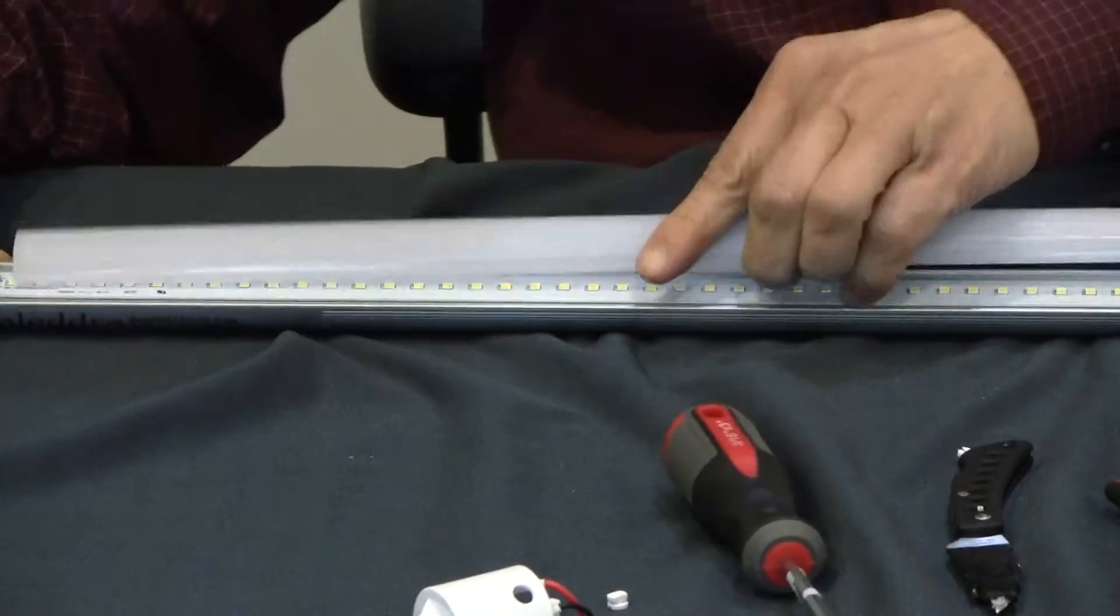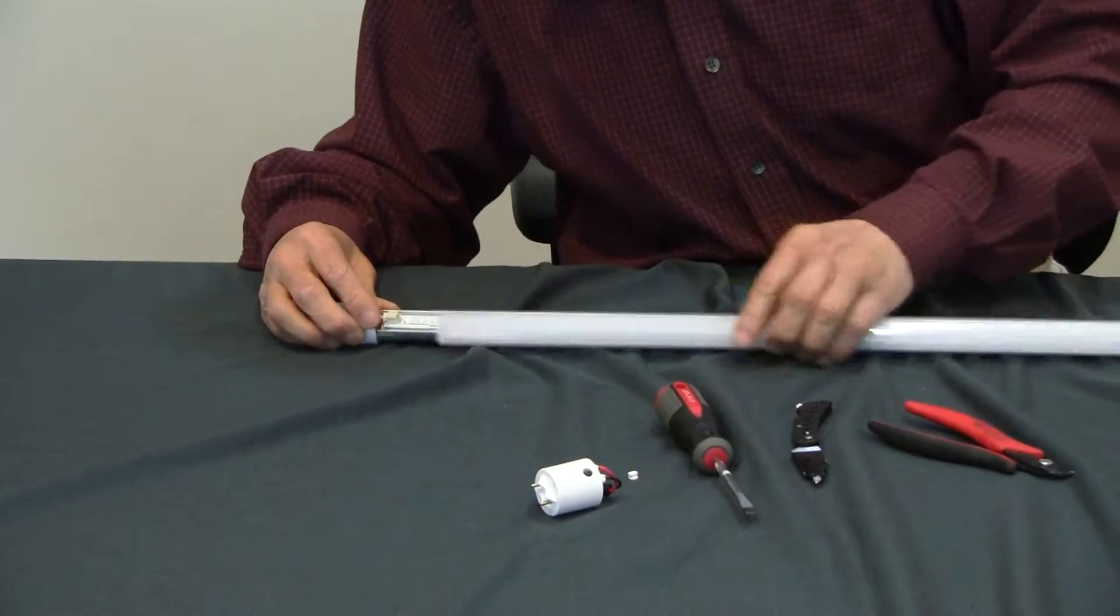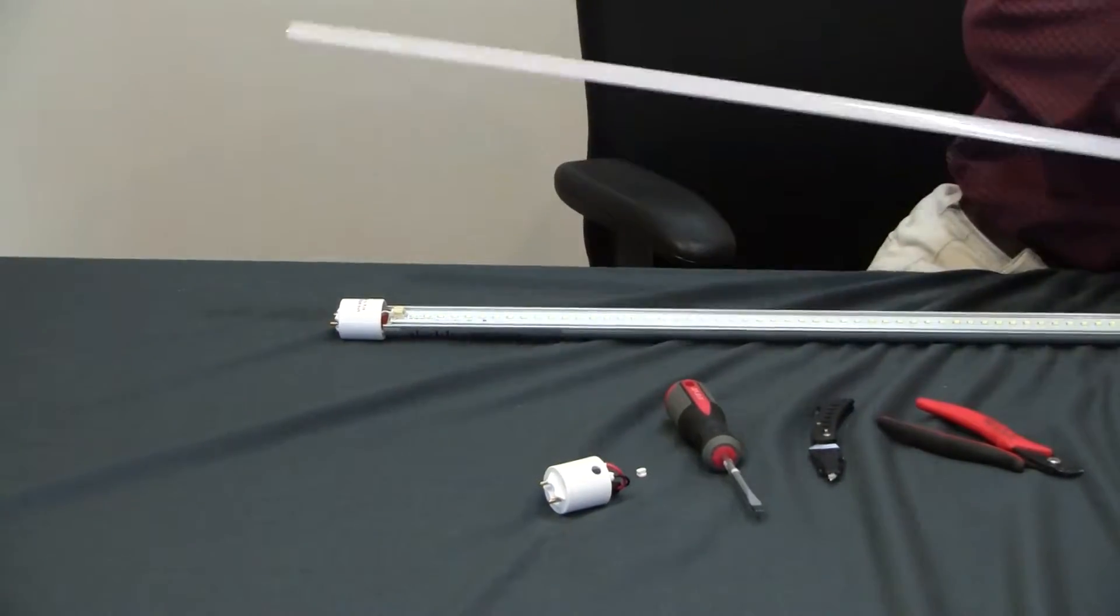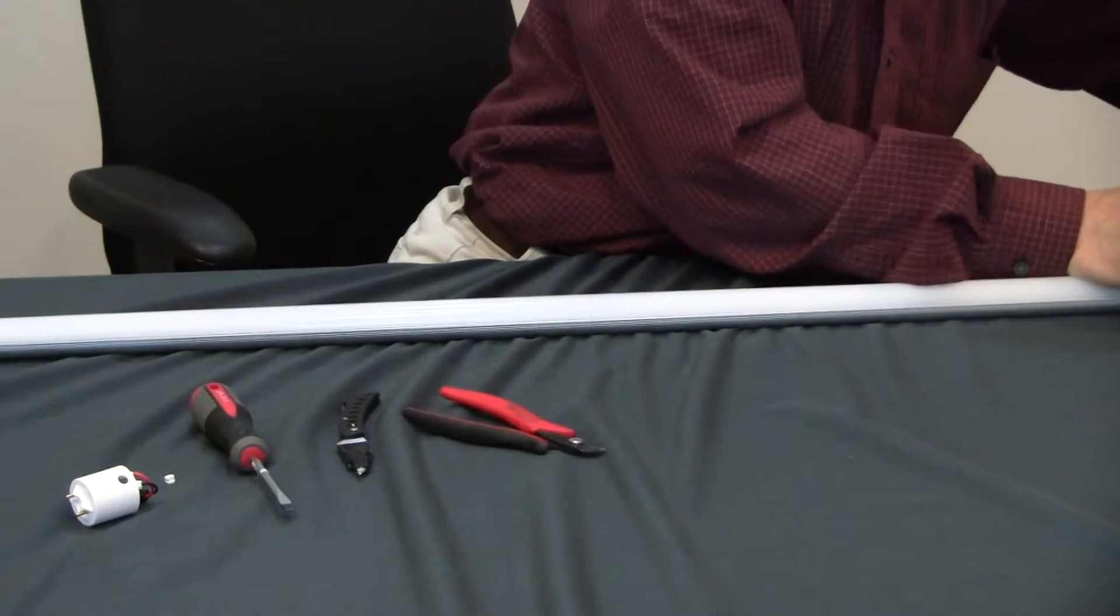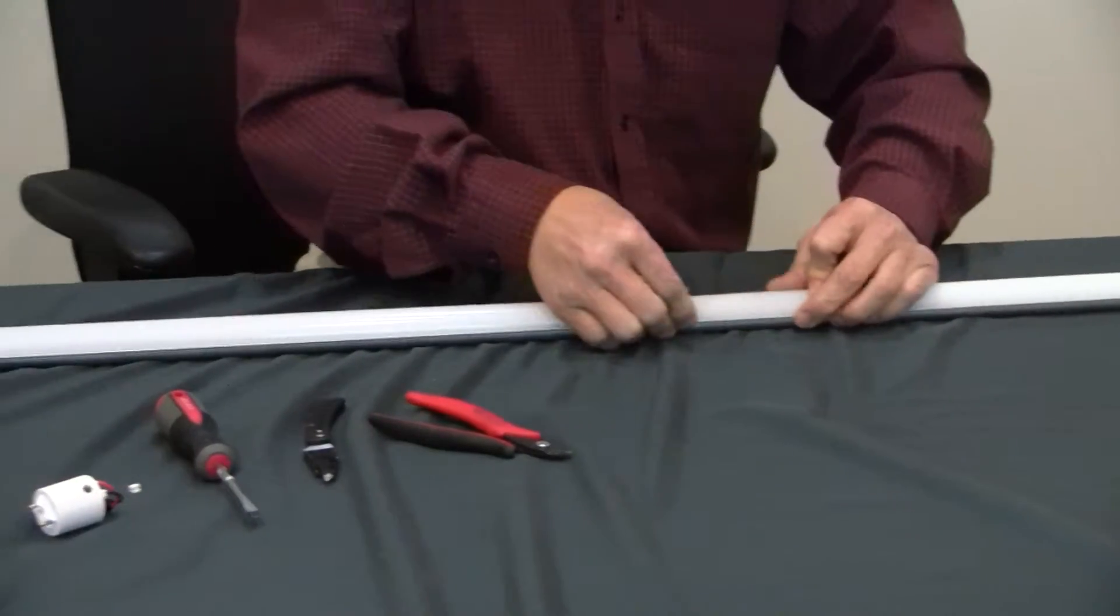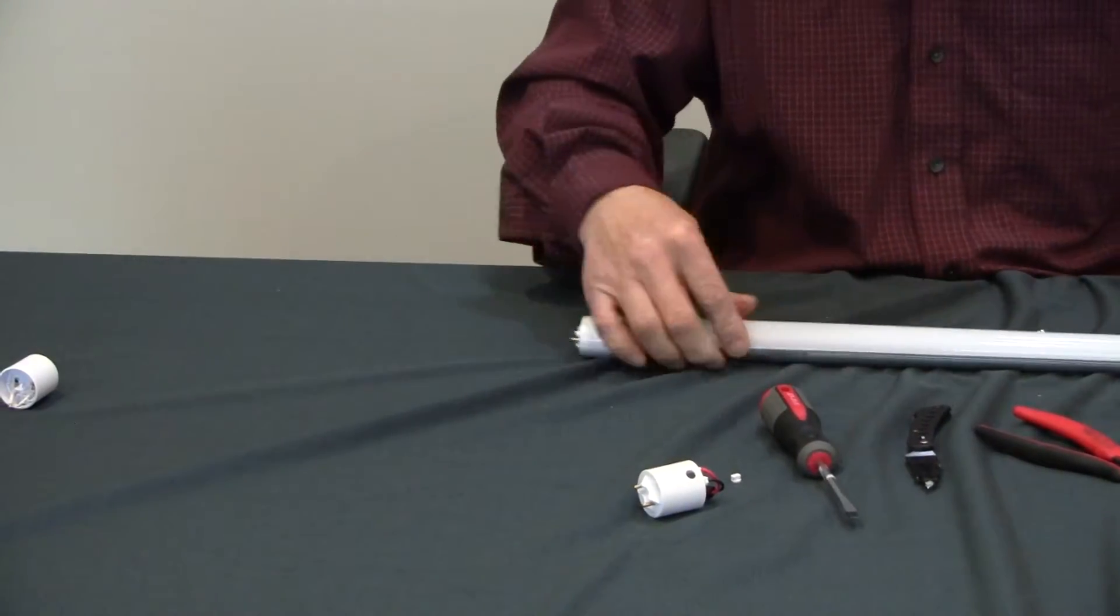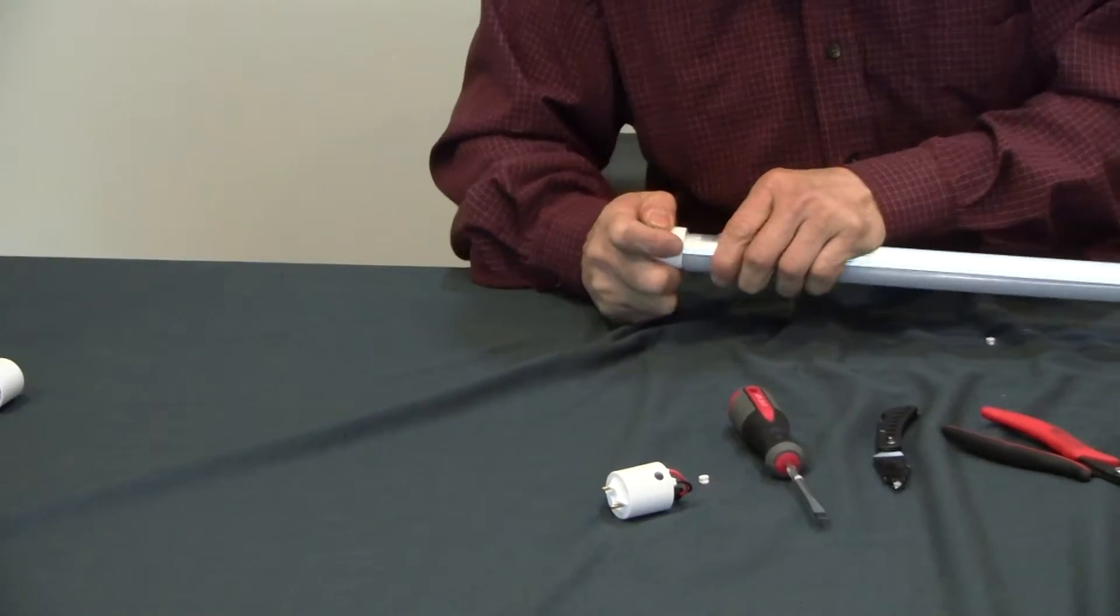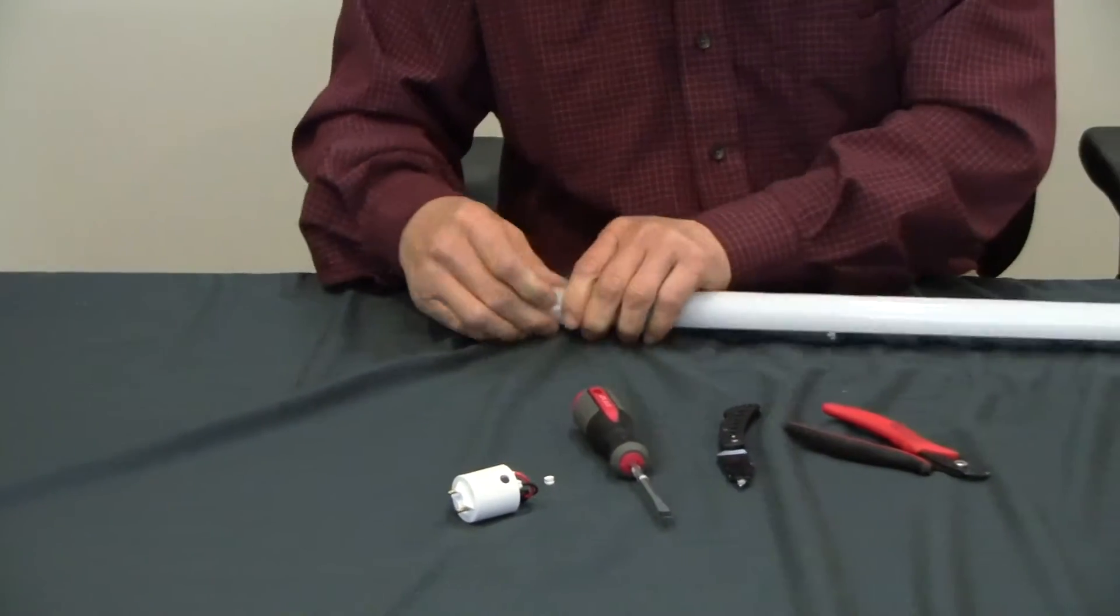Put the cover back, the cover lens back. Start from one end and press it all the way through. Nice and tight. And push the end cap in.